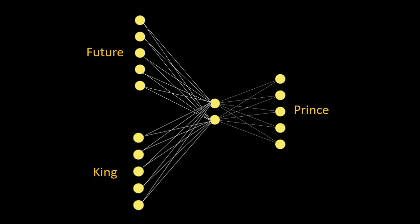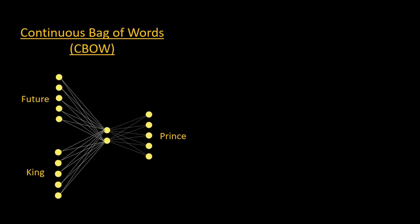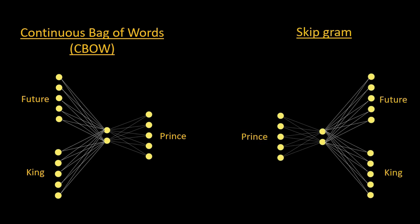In our dummy application we passed one word as input, but we can also pass two words as input and make the model predict a single output word, or even three words as input — and extract the weights of that layer as word embedding vectors. This technique is called Continuous Bag of Words (CBOW). There is another technique called Skip-gram, in which we do the opposite: we pass one input word and make the model predict two output words. Both techniques are part of word2vec, which uses them to obtain word embeddings.